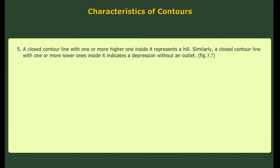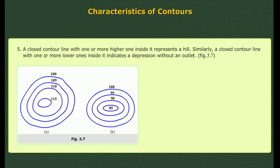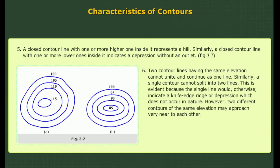5. A closed contour line with one or more higher ones inside it represents a hill. Similarly, a closed contour line with one or more lower ones inside it indicates a depression without an outlet.